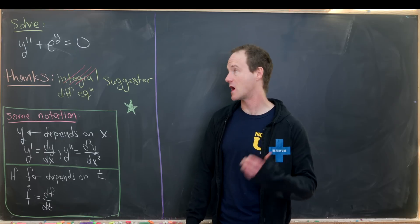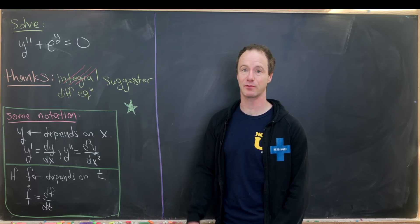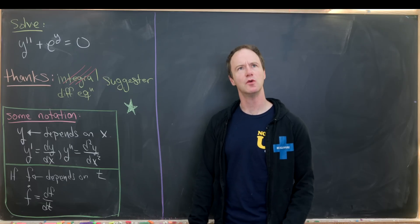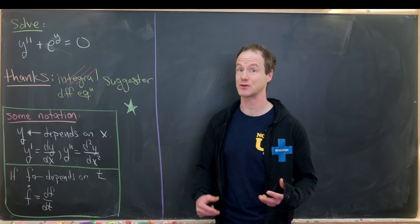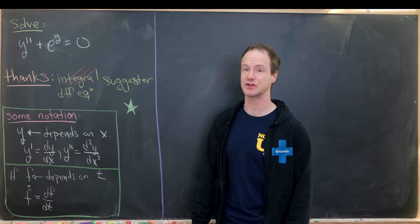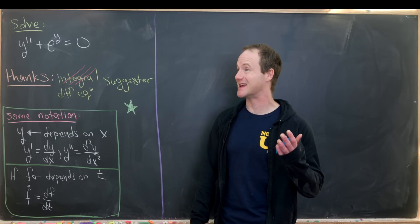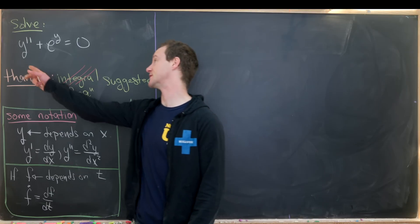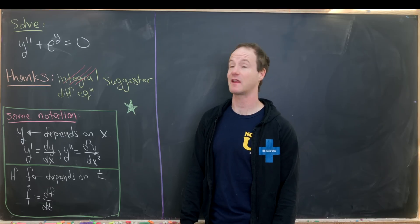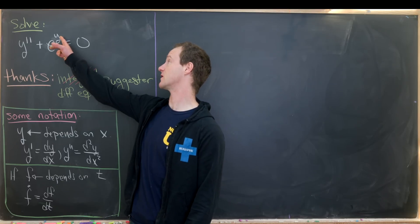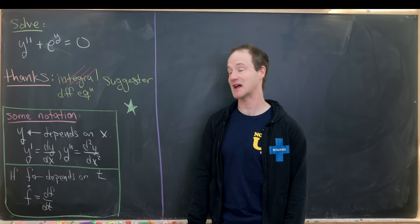Notice if we had y prime plus e to the y equals zero, we would have a separable differential equation, which is the type you can solve maybe in the first or second day of differential equations class. Whereas this one is much more difficult. It's a second order differential equation because we have a second derivative, and it's nonlinear because y is wrapped up in an exponential function.